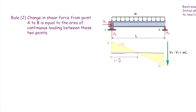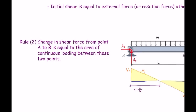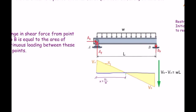Rule number two, which is very important: the change in shear force from point A to B equals the area under the continuous or distributed loading between those two points. Consider the area under the distributed load and add it to the current shear value — that gives the shear force at the right end. For a uniform load W over length L, the area is W times L. Since the load acts downward, it is negative, so we subtract W·L from the current shear value.